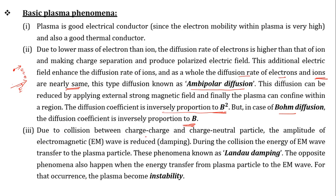Due to collisions between charged particles and between charged and neutral particles, the amplitude of an electromagnetic wave applied within the plasma is reduced. This reduction of electromagnetic wave amplitude due to collisions in the plasma is called Landau damping.